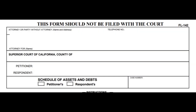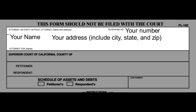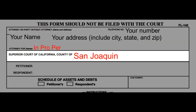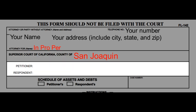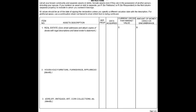The purpose of the FL-142 is to show all assets and debts that you and your spouse own. In the first section, write your name, telephone number, address including city, state and zip code, and in the attorney for box write 'in pro per.' In the second section write San Joaquin, and in the third section put your name next to petitioner and your spouse's name next to respondent.